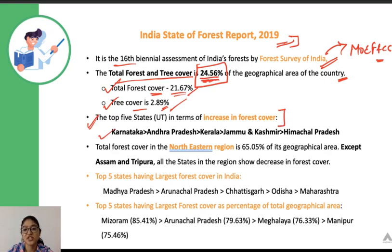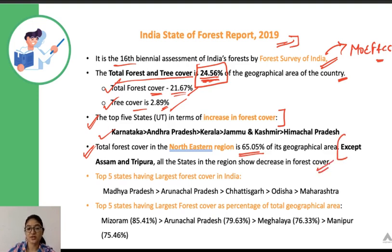The top five states in terms of increase in forest cover are Karnataka, Andhra Pradesh, Kerala, Jammu and Kashmir, and Himachal Pradesh. The total forest cover in the northeastern region is 65.05% of its geographical area. Except Assam and Tripura, all states in the region show a decrease in forest cover.